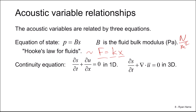The second relationship among acoustic variables is called the continuity equation. This relates condensation and fluid particle velocity through a temporal and spatial relationship, shown here in one dimension and three dimensions. It says that spatial changes in fluid particle velocity are related to temporal changes in condensation. Another way of thinking about this is that it's derived by considering conservation of mass — monitoring fluid particle velocity in and out of a constant fluid volume relates directly to the time rate of change of density, evaluated through condensation.